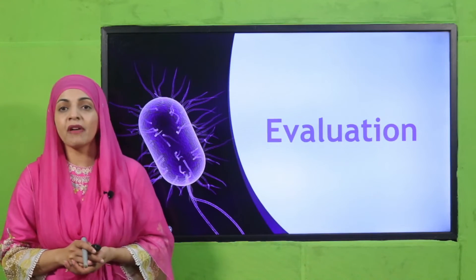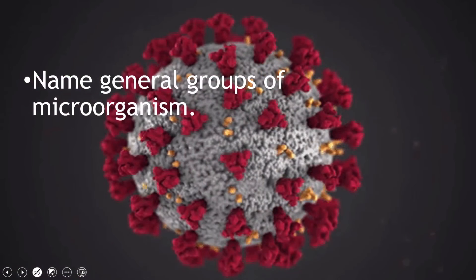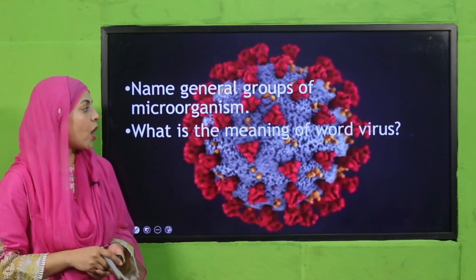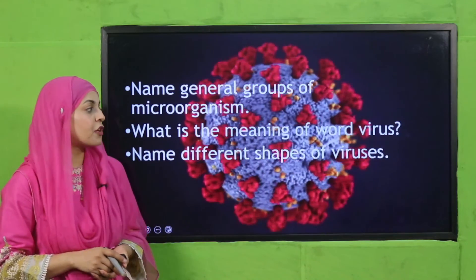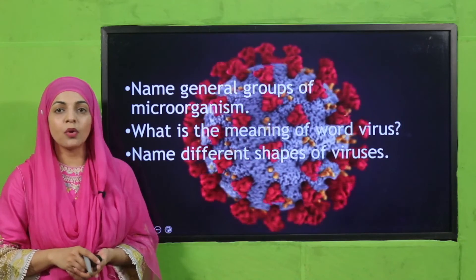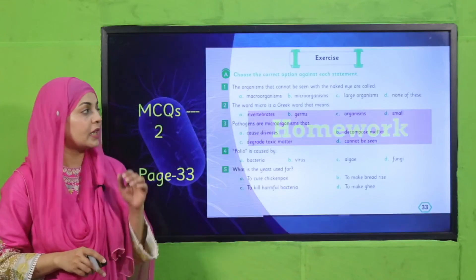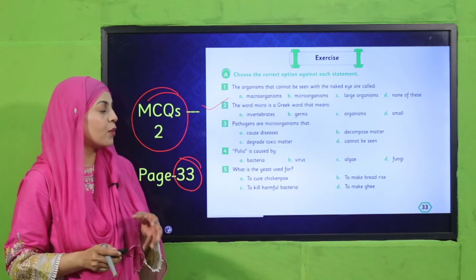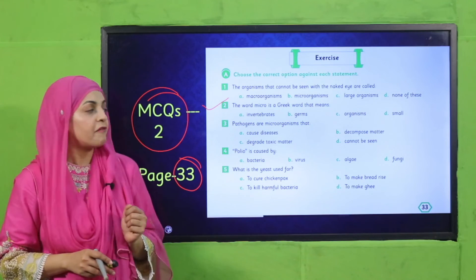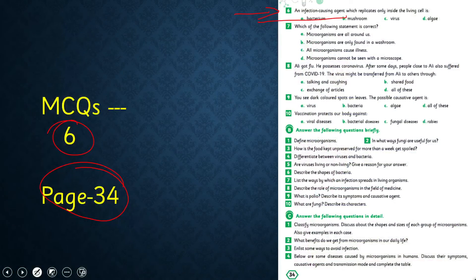Now let's move towards your evaluation. Quickly answer some questions orally: Name the general groups of microorganisms. What is the meaning of the word 'virus'? Name the different shapes of viruses — round, rod, tadpole, and polyhedral. For homework, do MCQ number 2 on page number 33: 'The word micro is a Greek word that means — invertebrates, germs, organisms, or small.' And then MCQ number 6 on page number 34, to be done in your books.